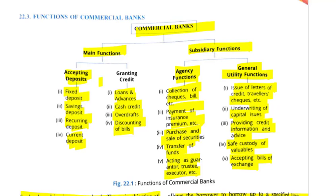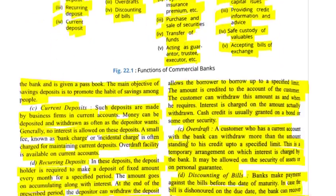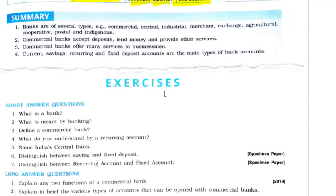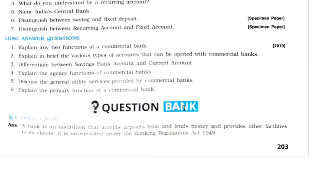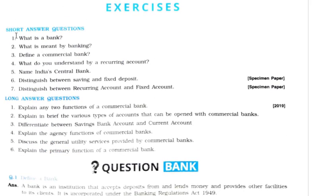In this lecture, we have discussed the functions of commercial banks. You should be able to draw the summary chart and describe each point in one or two lines. Go through the summary and write answers to each question given at the end. Discuss with me if you do not understand any term. Thank you.